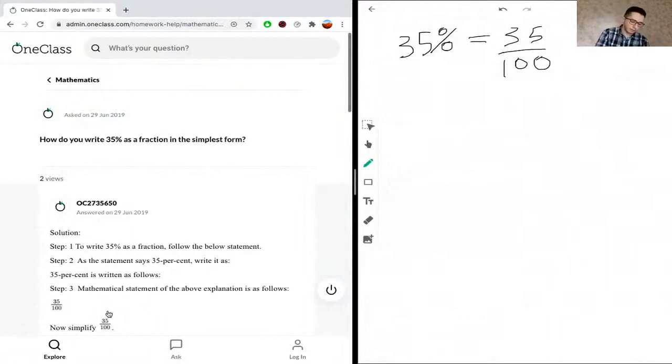The first thing you want to do is think about what are factors of 35 and then what are factors of 100. Factors of 35 would be 1, 7, 5, 35. We know 7 times 5 will give us 35. For 100 we have 1, 2, 5, 20, 10, and we can keep going.